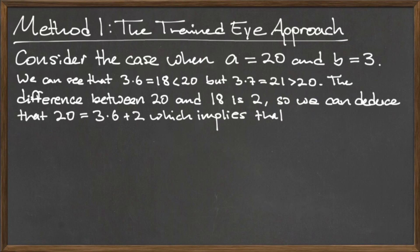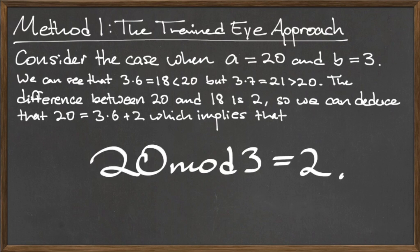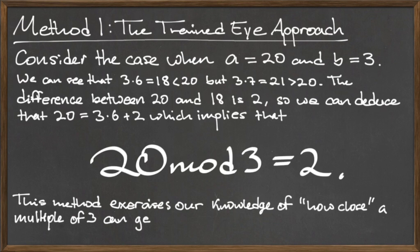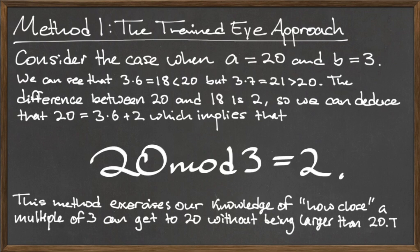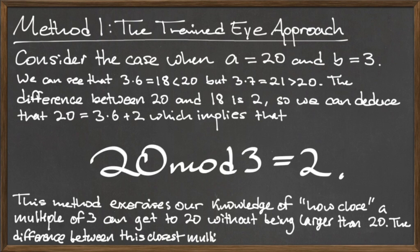When a equals 20 and b equals 3, note that 3 times 6 is equal to 18, which is less than 20. However, 3 times 7 is equal to 21, which is bigger than 20. The multiple of b that gets us closest to 20 without going over is 6. Once we have this multiple and the product of that multiple and b, we take the difference of a and that product to find a mod b. So the multiple of b closest to 20 is 6, and 3 times 6 is 18. Therefore, a mod b will be 20 minus 18, which is 2. So we say that 20 mod 3 is equal to 2.